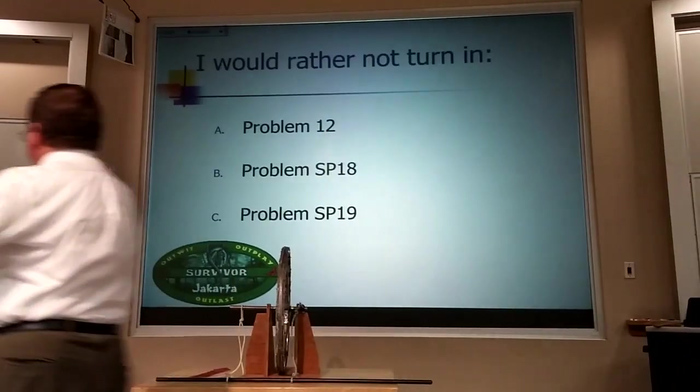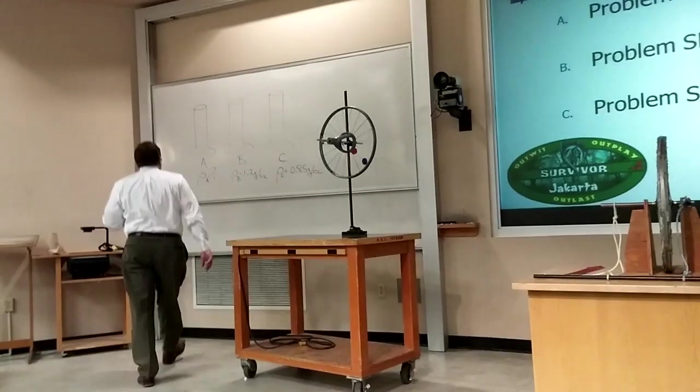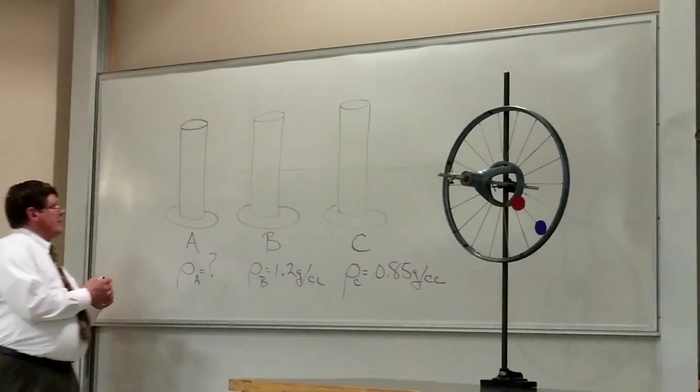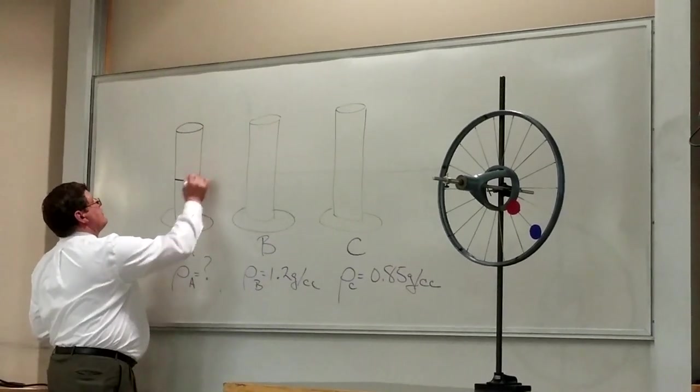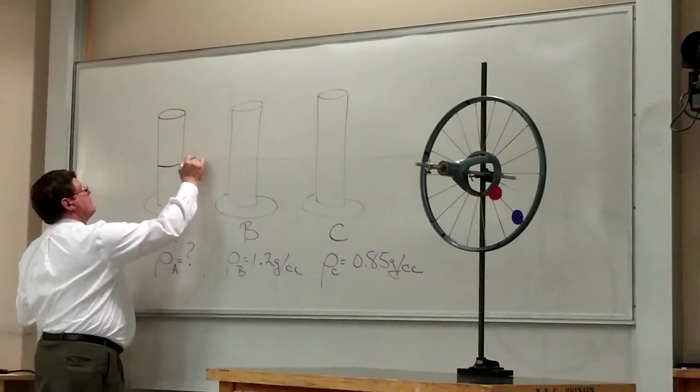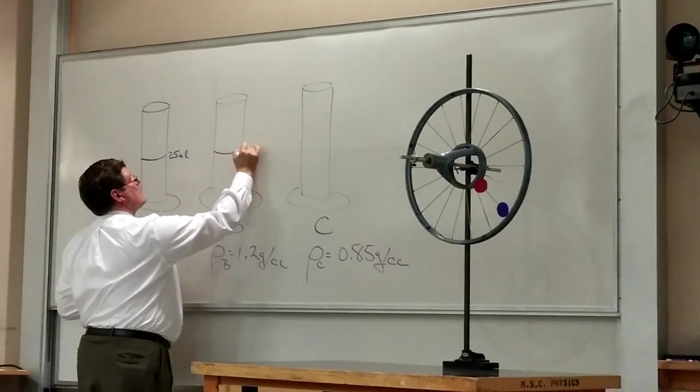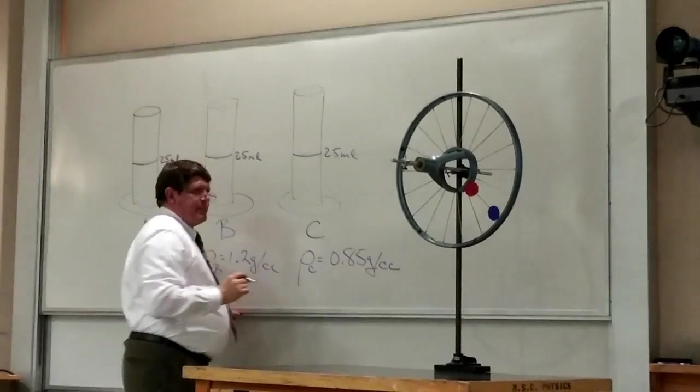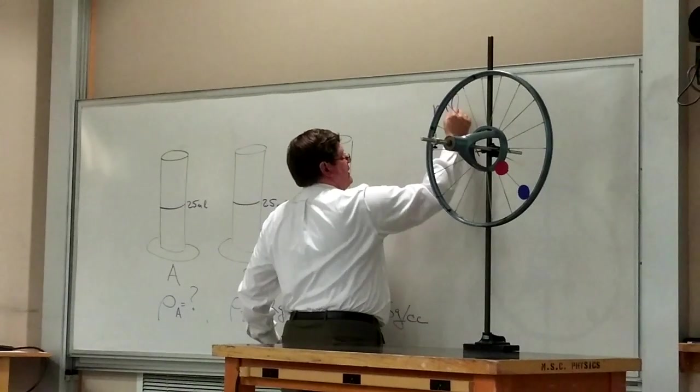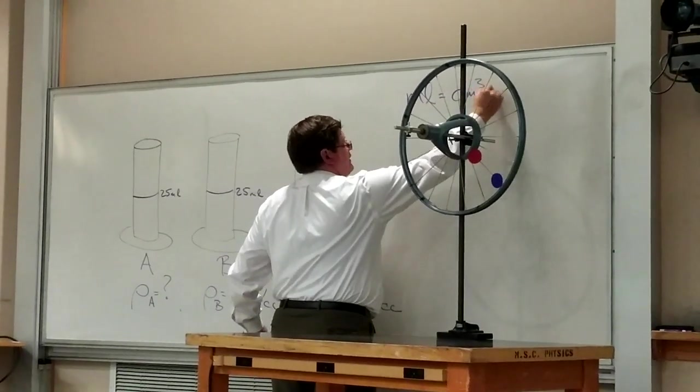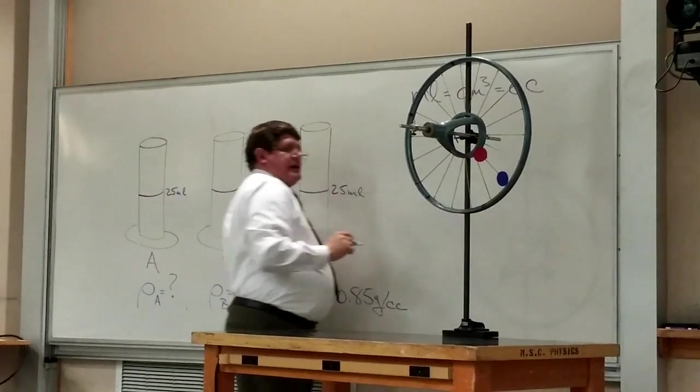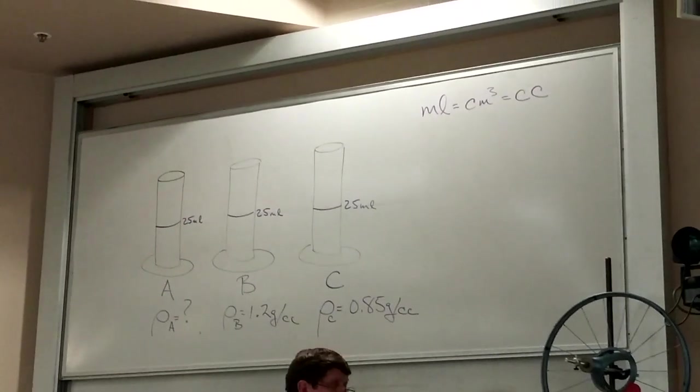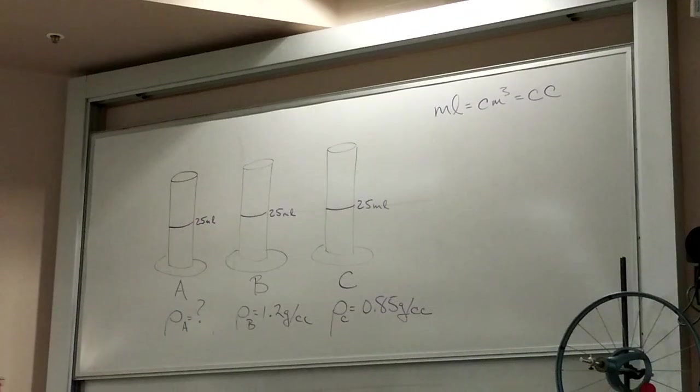This is an old exam problem. You have three beakers filled with different liquids and in all cases the liquid starts at the 25 milliliter mark. Remember in all of these problems that a milliliter is the same as a cubic centimeter which is the same as a CC. In the medical profession they tend to use milliliter. In science classes we tend to use either centimeter cubed or CC.